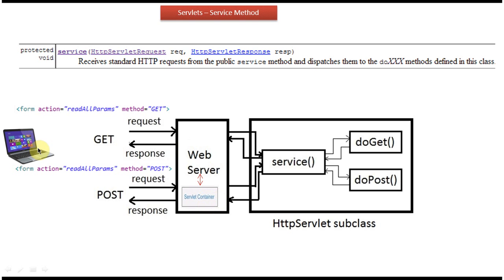Suppose a client is sending a GET request to the web server. The web server will forward the request to the Servlet container. The Servlet container will then call the service method of HTTP Servlet. This service method will decide whether to call doGet, doPost, or some other method like doHead, doOptions, or doTrace.